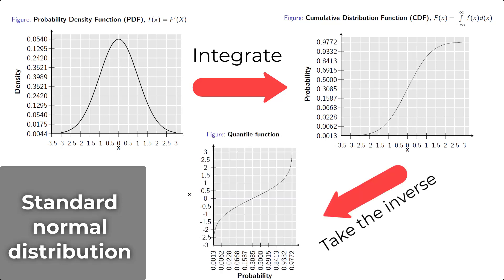And to move from the CDF to the quantile function, we just take the inverse. The x-axis becomes the y-axis, and the y-axis becomes the x-axis. So in order to simulate the random numbers from a normal distribution, we require the quantile function.